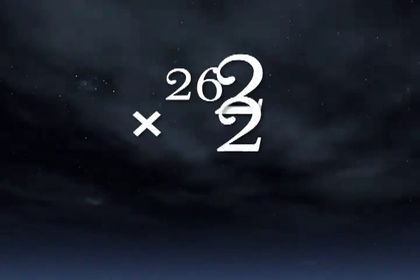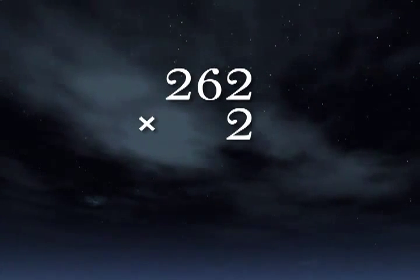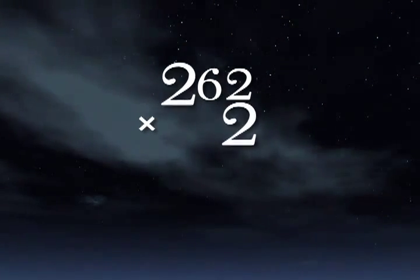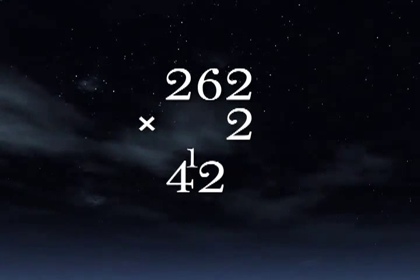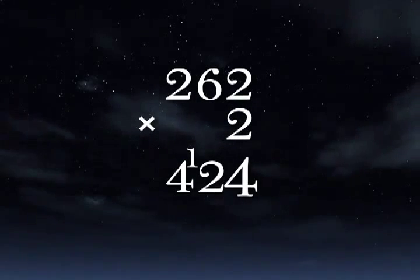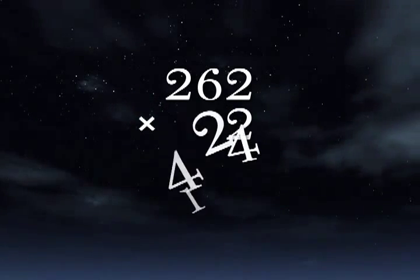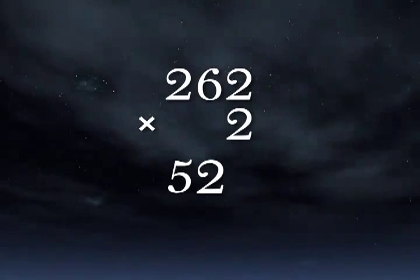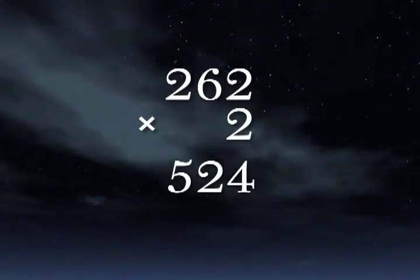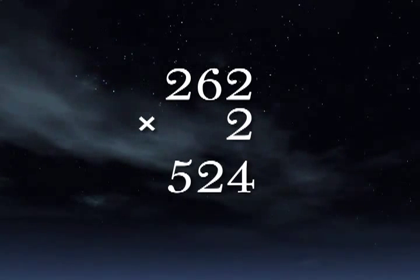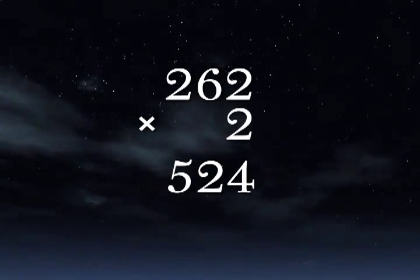Take a look at this problem. If you do this problem normally from left to right, you have 2 times 2, and then 2 times 6, which has a carried number to the left, and then 2 times 2. But you can also look at this problem as 26 times 2, which is equal to 52, and then 2 times 2 equals 4. So no carrying involved if you spot the shortcut and calculate 26 times 2. So the answer is 524.